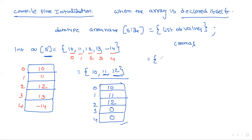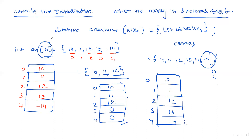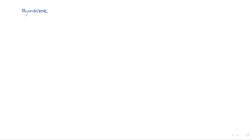If you provide more values than the array size — for example, giving six values for int a[5] — there is no place for the sixth element. In this case the compiler gives an error: 'too many initializers.' This means you are trying to assign more values than the allocated array size allows.